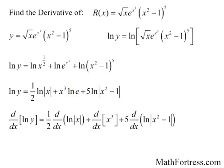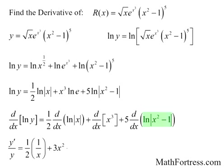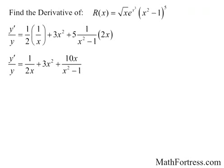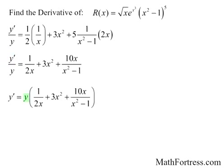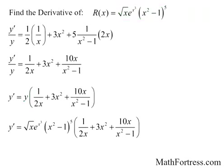Now we take the derivative of both sides. The derivative of the left-hand side equals y prime over y. For the right side, the first term gives 1 over x, plus 3x squared from the second term. The third term requires the chain rule with the outer function as the natural log and inner function as x squared minus 1. We take the absolute value since x squared minus 1 attains negative values, giving 1 over x squared minus 1 times 2x. Solving for y prime by multiplying both sides by y and substituting the original function, the final derivative equals the square root of x times e to the x cubed times the quantity x squared minus 1 to the 5th, times the quantity 1 over 2x plus 3x squared.